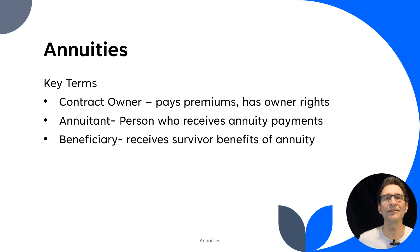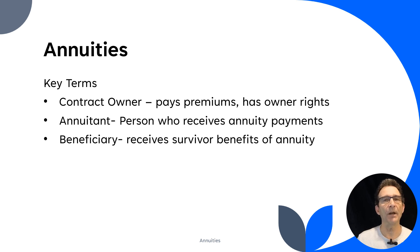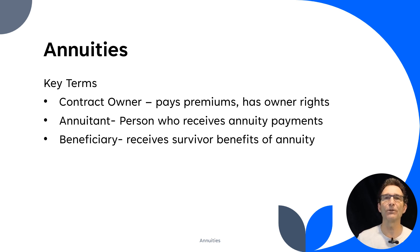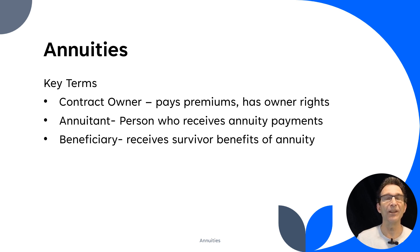The key terms you need to know about annuities: there's a contract owner. These are sold by insurance companies, but you have a contract owner rather than a policy owner. The contract owner is the one who pays the premiums and has those owner rights — very similar idea, just a different name. The annuitant is the person who receives those annuity payments. That's very important.